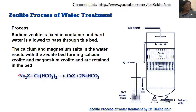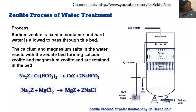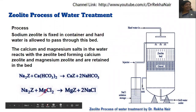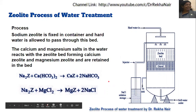Calcium can replace the sodium of sodium zeolite, giving us calcium zeolite plus sodium bicarbonate as products. Similarly, if you have magnesium ions — for example, magnesium chloride — this will react with sodium zeolite, and the sodium will be replaced by magnesium, giving magnesium zeolite and sodium chloride. Sodium and potassium ions are not hardness-producing substances; they dissolve in water and do not create any hardness problem.